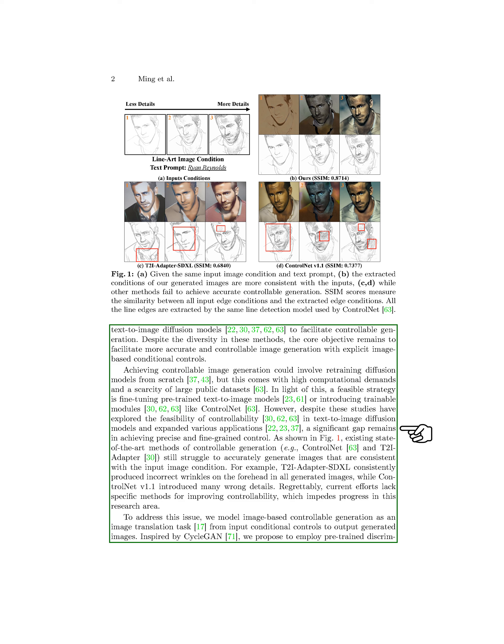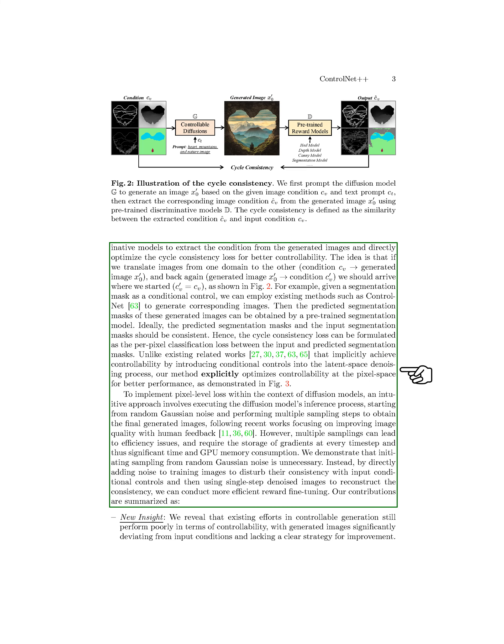To address this issue, we propose modeling image-based controllable generation as an image translation task inspired by CycleGAN. By using pre-trained discriminative models to extract conditions from generated images and optimizing cycle consistency loss, we aim to improve controllability. The cycle consistency loss ensures that when translating images from one domain to another and back, we maintain consistency with the original conditions.